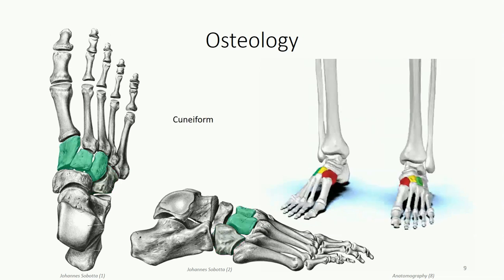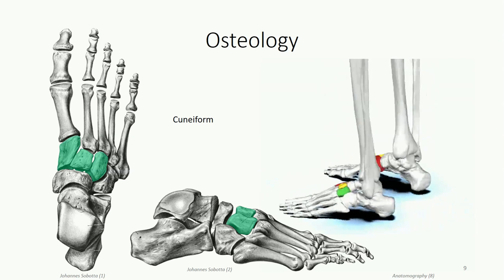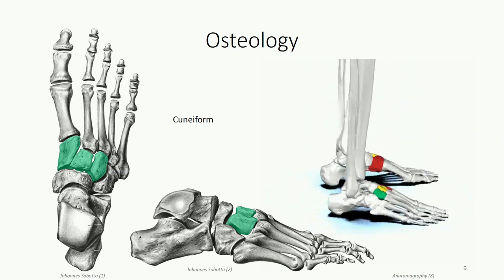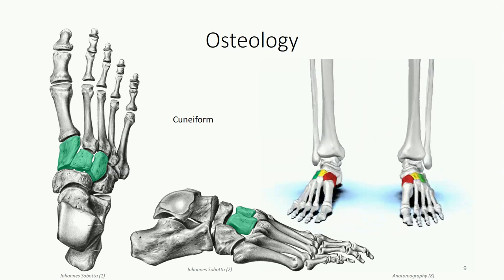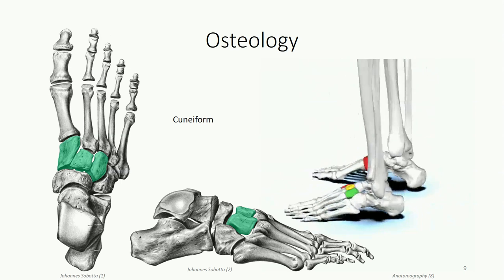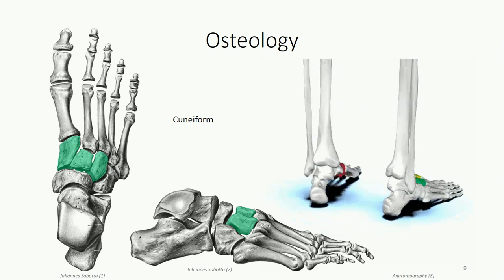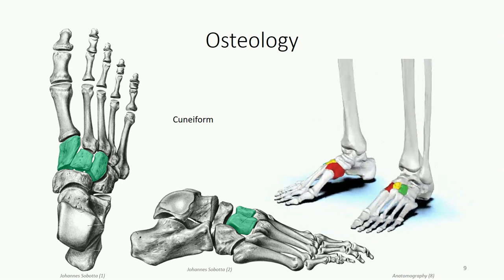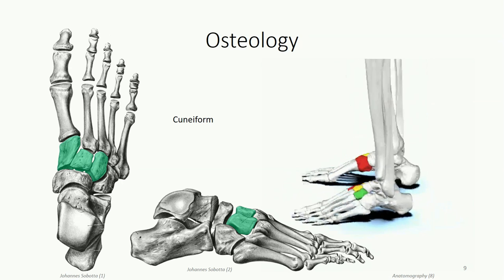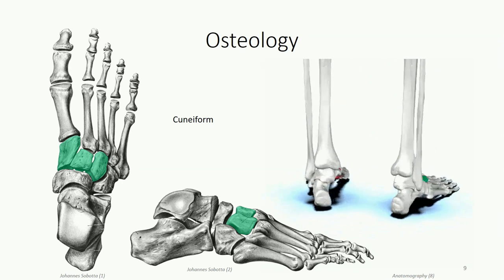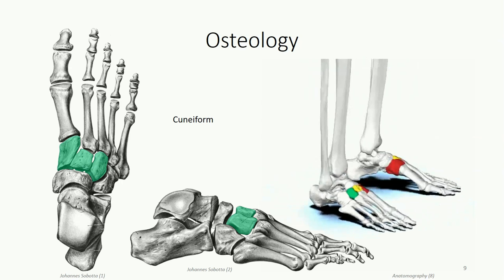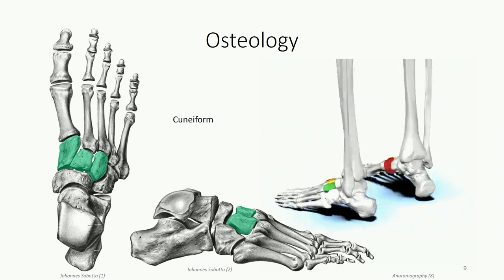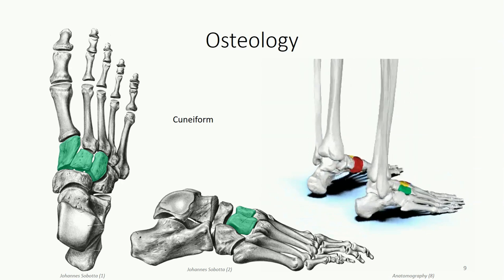The distal medial row of tarsal bones is made up of the lateral, intermediate, and medial cuneiform bones. Cuneiform is a Latin term meaning wedge shape, which describes the appearance of these bones in the coronal plane. This keystone shape contributes to the transverse arch, providing depth to the plantar surface to absorb ground reaction forces and prevent plantar structures from being crushed during weight-bearing.